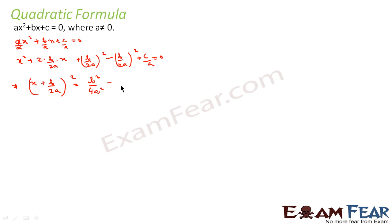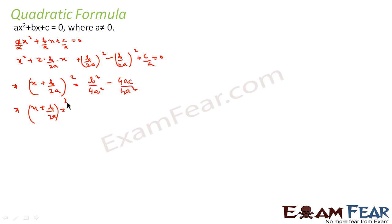And I'll write c/a as 4ac/4a². I have multiplied by 4a because 4a² is common here. So this I can write as (x + b/2a)² = (b² - 4ac) / (2a)², which is (√(b² - 4ac) / 2a)² whole square.